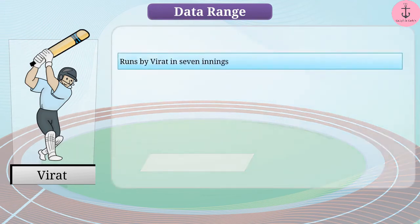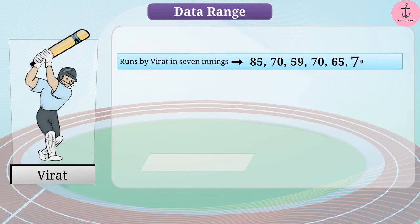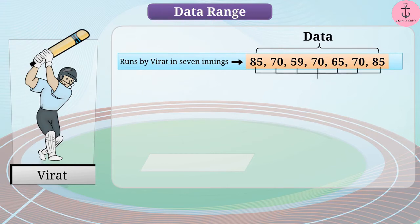We would need to list out the number of runs scored by Virat in some of his innings. Let's say the number of runs scored by Virat in his seven innings are 85, 70, 59, 70, 65, 70, 85. This essential numerical information can be referred to as data, and each number can be referred to as an observation.